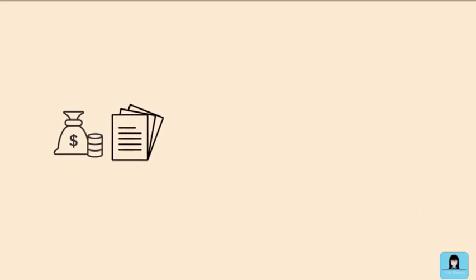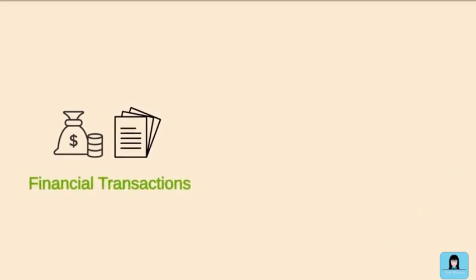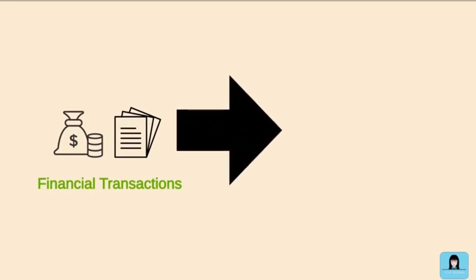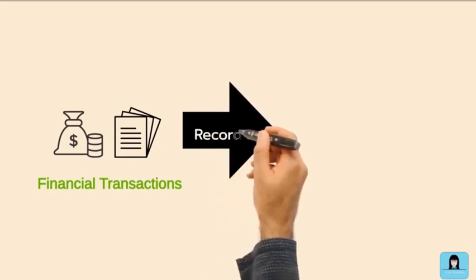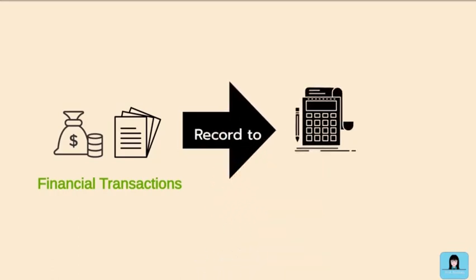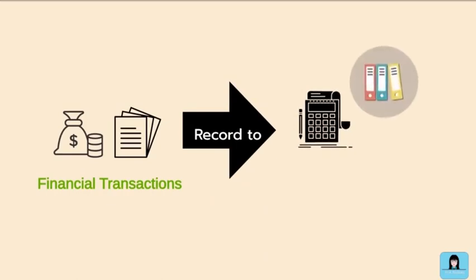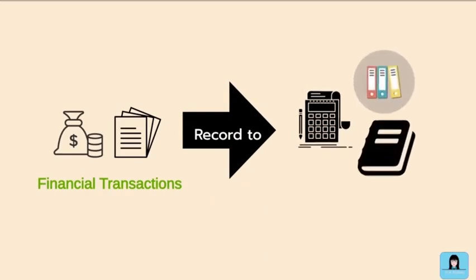The second function of TPS is the recording of transactions. Once the data are collected from the transactions, TPS records this in the accounting records, such as journals and ledgers.